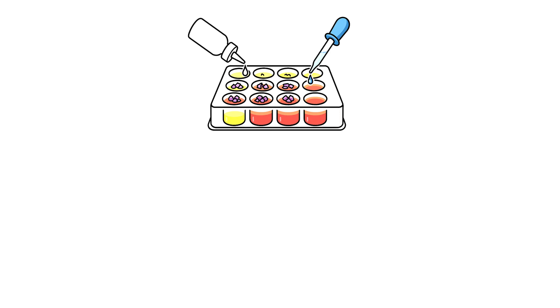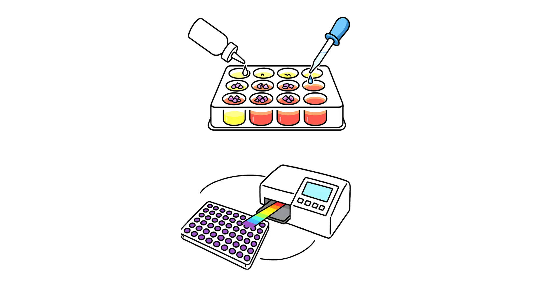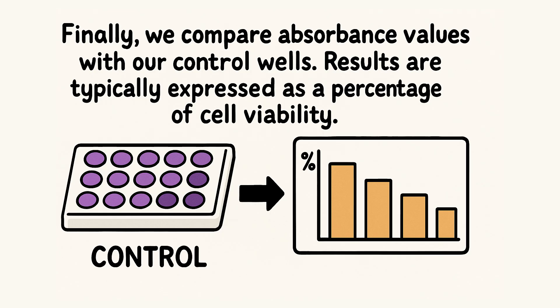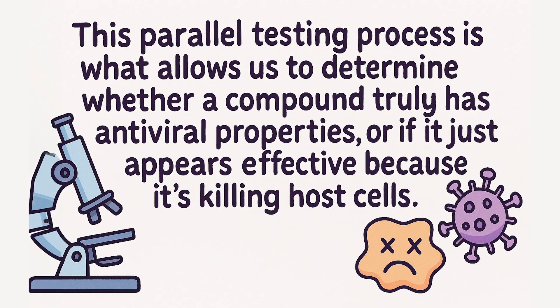This causes a visible color change in the solution. The absorbance of this colored solution is measured at a specific wavelength using a spectrophotometer or microplate reader. Finally, we compare absorbance values with our control wells. Results are typically expressed as a percentage of cell viability. We also include a 100% kill control well for reference. This parallel testing process allows us to determine whether a compound truly has antiviral properties or if it just appears effective because it's killing host cells.